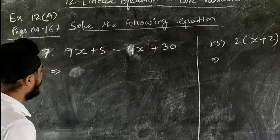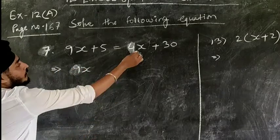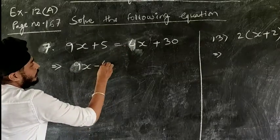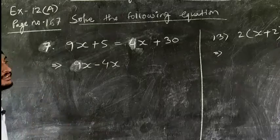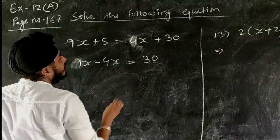Now let's see how it is done. So 9x, if 4x is brought to this side, this plus 4 will become minus 4x, equal to 30. If plus 5 is brought to the right hand side, this plus will become minus 4x.